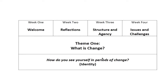Our course is divided into three big themes. Theme one looks at 'what is change?' For each week, readings revolve around one particular aspect of change. Week one is a welcome with accessible readings; complexity increases as the semester progresses. Week two looks at reflections, week three introduces structure and agency, and week four looks at issues and challenges. The central question for theme one is: how do you see yourself in periods of change? I'm asking you to think about your identity as an individual in the midst of educational change, transformation, and reform.